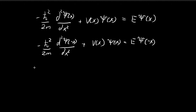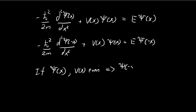This tells us that if ξ(x) is a solution and the potential is an even function, then this implies that ξ(-x) is also a solution, because ξ(-x) also satisfies the time-independent Schrödinger equation.